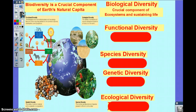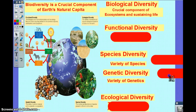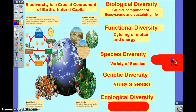Different types of plants — where would that be? Species. If you're going to talk about a specific type of organism, you have variety of species. Or genetic — a lot of different types of genes. Variety of genetics. Variety of chemical processes. Functional processes — cycling and matter.